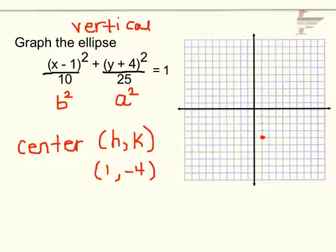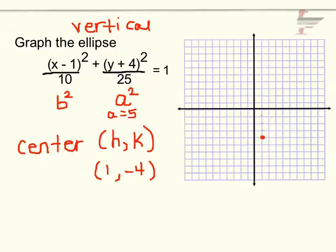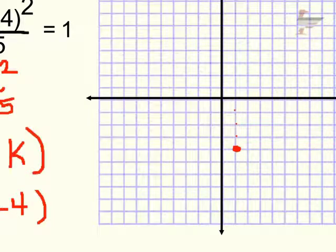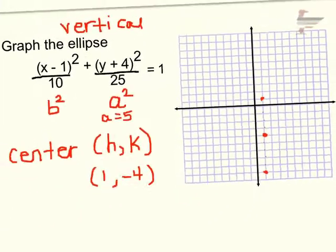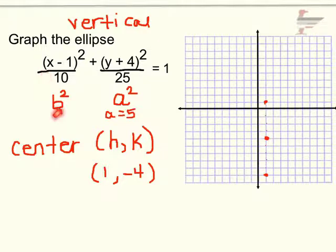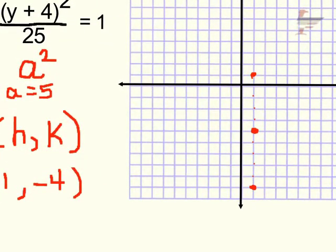In the y direction I'm going to go 5 units from my center, because a squared is 25 so a is 5. So from the center, I go 5 units up and 5 units down. My co-vertices are in the x direction: b squared is 10, so b is the square root of 10, which is roughly 3.1. From my center I go approximately 3 units in both x directions to mark the co-vertices.